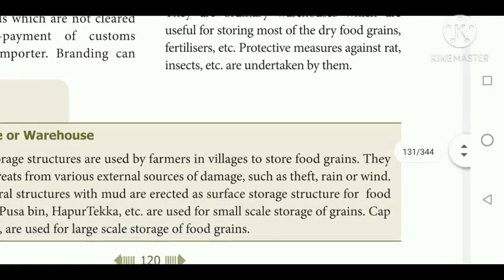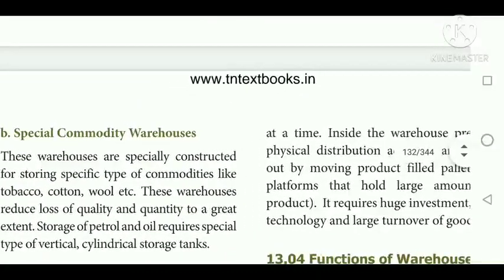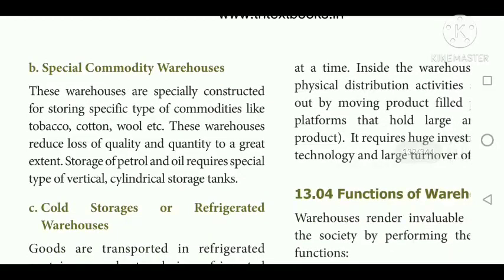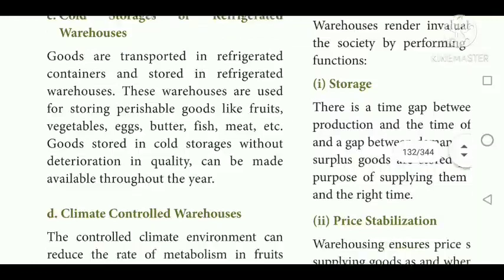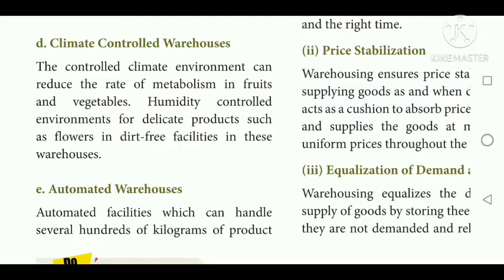On the basis of commodities stored — general warehouses: useful for storing most dry food grains and fertilizers; protective measures against insects are used. Special commodity warehouses: constructed for storing specific types of goods such as tobacco, cotton, and wool, reducing loss of quality and quantity. Cold storage or refrigerated warehouses: used for storing perishable goods like fruits, vegetables, eggs, butter, fish, and meat. Climate control warehouses: provide humidity-controlled environments for delicate products such as flowers in dirt-free facilities. Automated warehouses: handle several hundreds of kilograms of products at a time; require huge investment, advanced technology, and large turnover of goods.